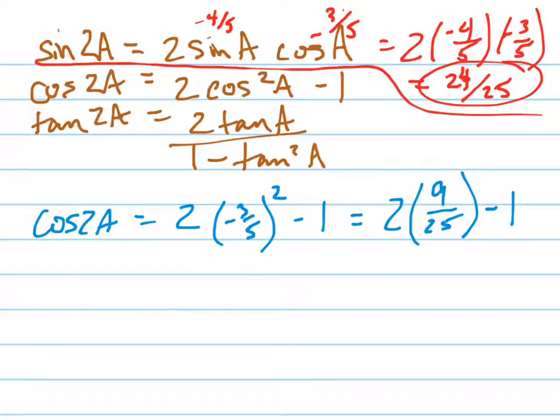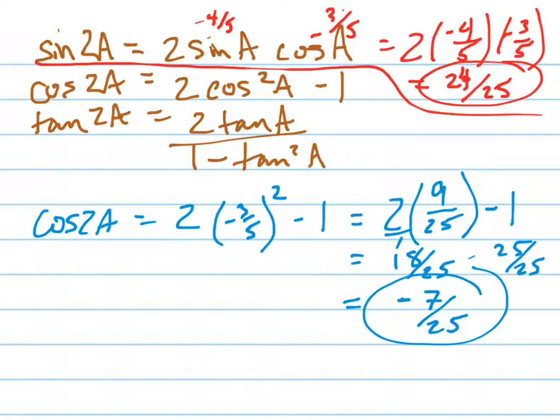And then, this is like 2 over 1, so that's like 18 over 25 minus 1, which is really 25 over 25. So that's really negative 7 over 25. The cosine is negative 7 over 25.